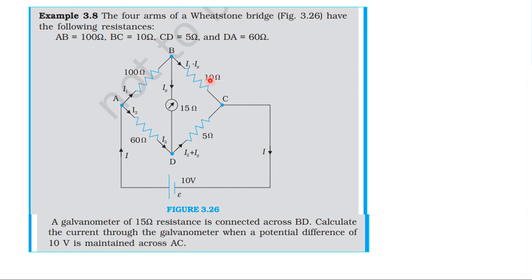If you think about it: 100 ohm, 10 ohm, 60 ohm, 5 ohm — these are connected in the bridge arrangement with a 10 volt battery. We need to find the current through the galvanometer when a potential difference of 10 volt is maintained across AC.